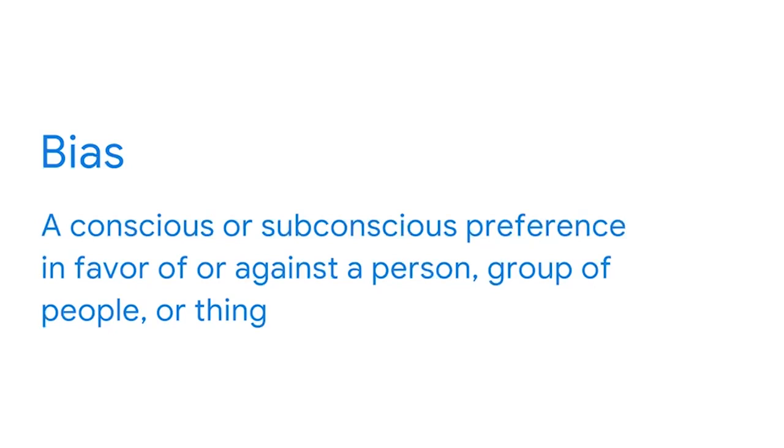Also, at this point in the process, an essential responsibility of every BI professional is to consider bias. Bias is a conscious or subconscious preference in favor or against a person, group of people, or thing. There are many different types of bias that can affect a data-related project, such as confirmation bias, data bias, interpretation bias, and observer bias. These concepts were taught in depth in the Google Data Analytics certificate, so please review them now if you need to.